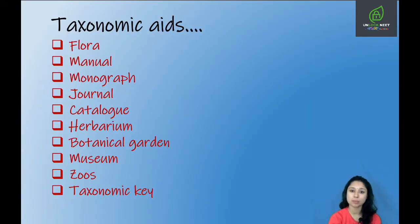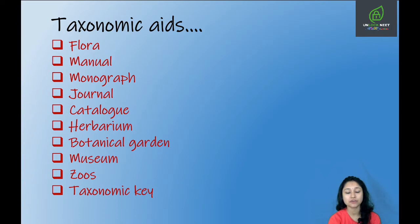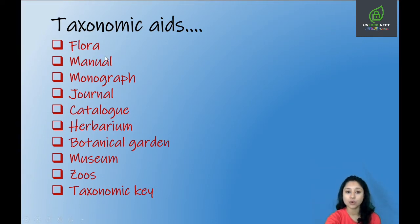Taxonomic aids can be the techniques, procedures, and stored information that can be utilized for classification and identification of organisms. The taxonomic aids we are going to discuss are: flora, manual, monograph, journal, catalogue, herbarium, botanical garden, museum, zoos, and taxonomic key.